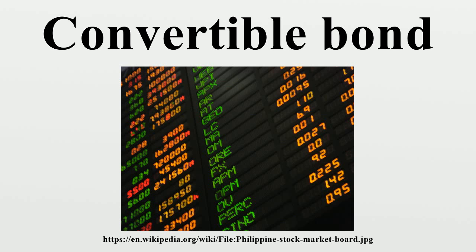These properties lead naturally to the idea of convertible arbitrage, where a long position in the convertible bond is balanced by a short position in the underlying equity. From the issuer's perspective, the key benefit of raising money by selling convertible bonds is a reduced cash interest payment.